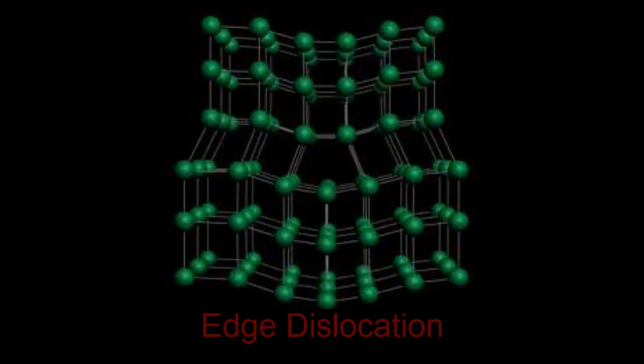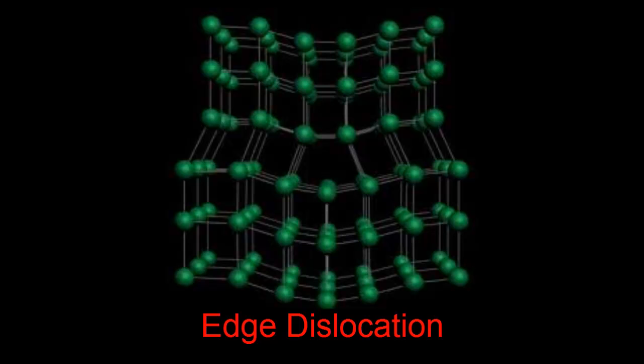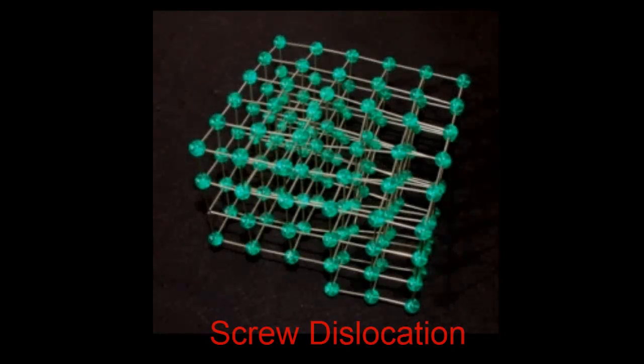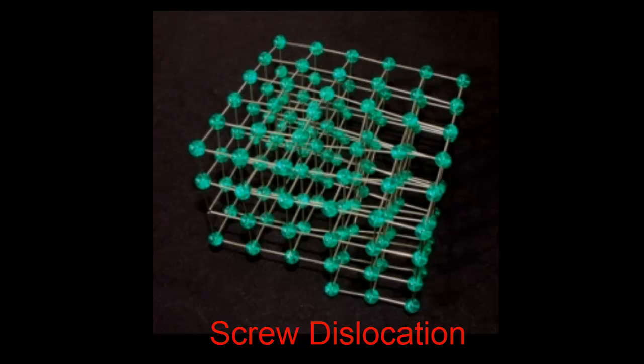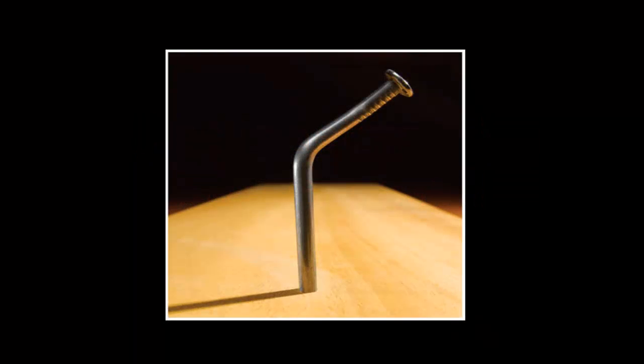In plastic deformation, when a load is applied to a material, it deforms; however, it does not return to its original shape. This is due to microscopic dislocations, such as edge and screw dislocations. When these dislocations are introduced into a lattice, they permanently alter the structure of that lattice. Thus, plastic deformation is a permanent deformation.